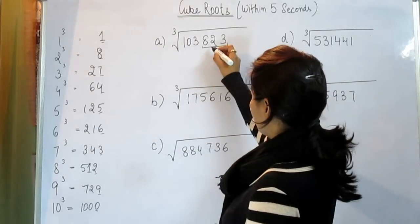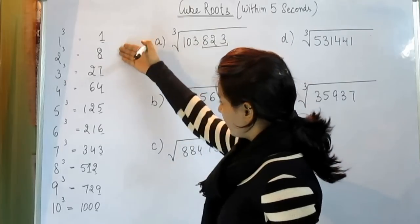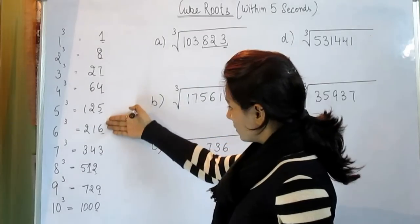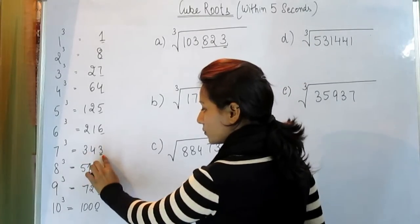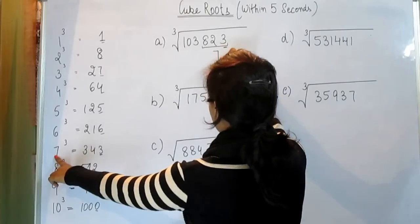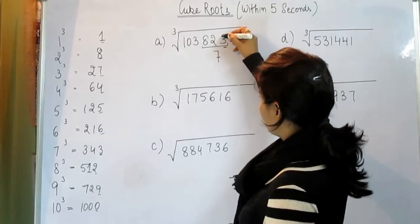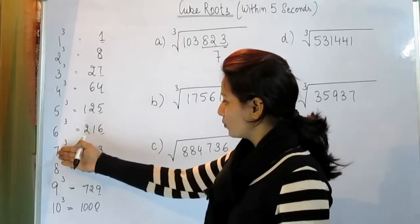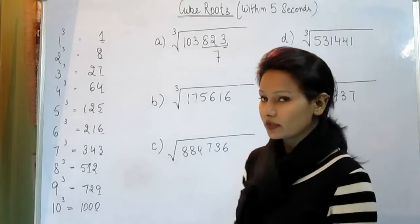Now we were where? So we took the last three digits. Now find here, this is 3. Find here, where is 3? This is here, 3 is here, and this number 3 comes in the cube root of 7. So we put 7 here. This is the first step. So take this number, this is 3, where is 3? 3 is here. Put 7 over here because 3 is the cube root of 7.